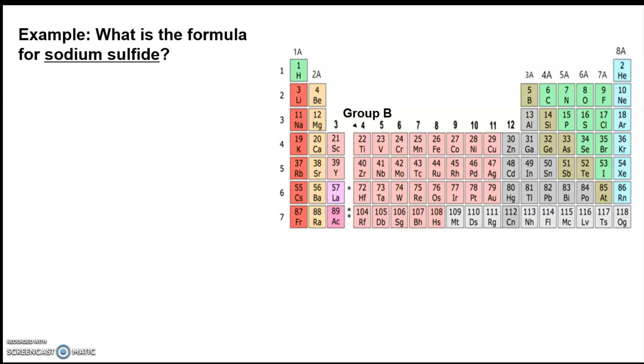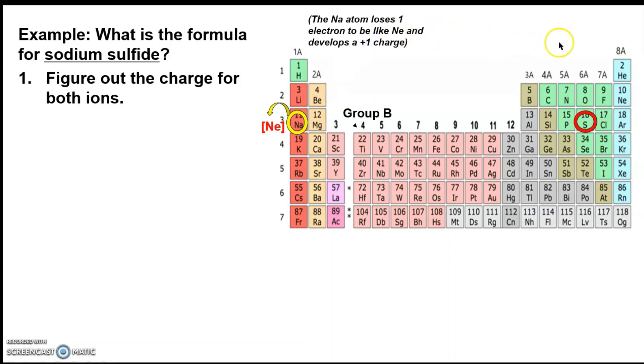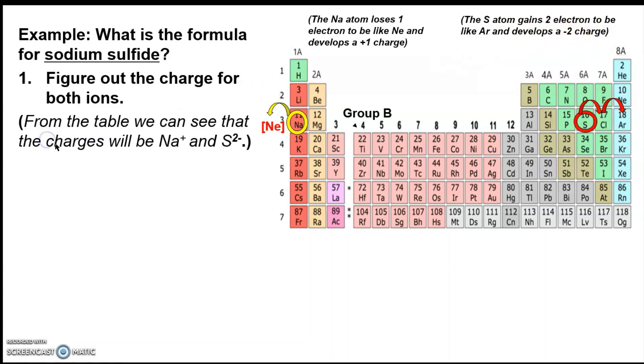All right, so another type of problem, a good example of what you might get on a test, what is the formula for sodium sulfide? And again, the first step is to figure out the charge for both ions. Sodium is right there. Sulfur, which will become sulfide, is right there. And sodium is going to want to try to be like neon, stable noble gas configuration. When it does that, it loses one electron and develops a plus one charge. For sulfur, we're going to try to be like argon. We're going to gain two electrons and develop a minus two charge.